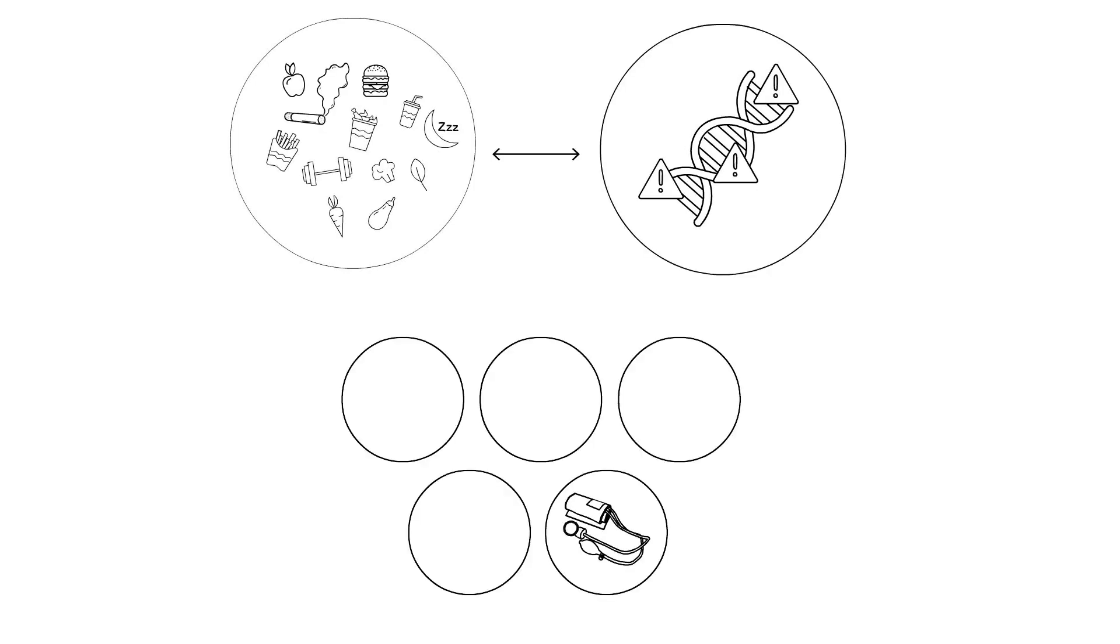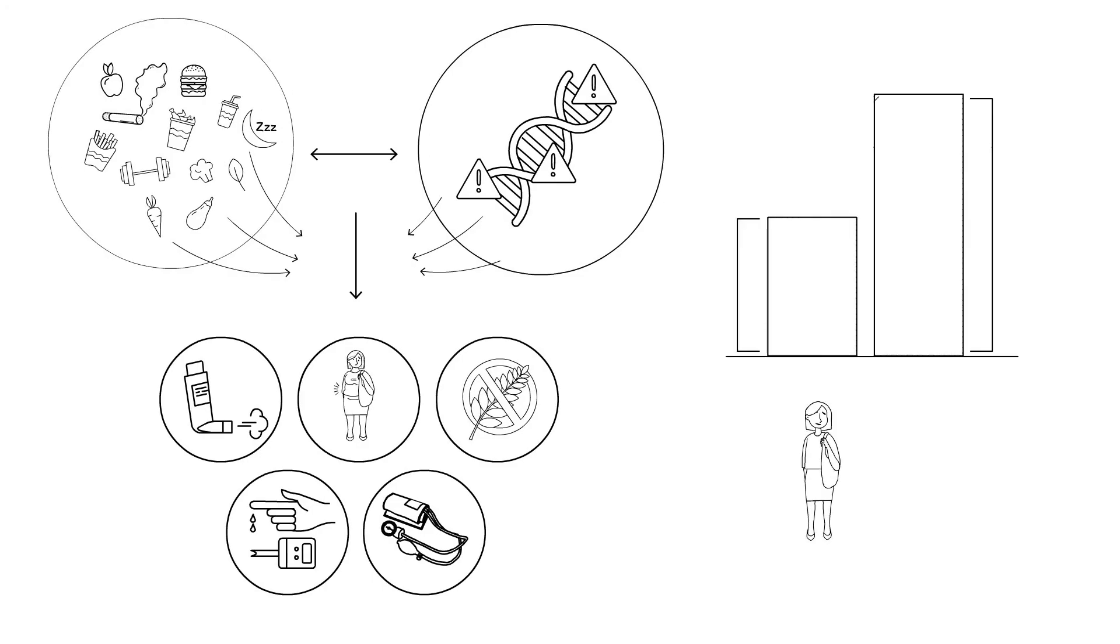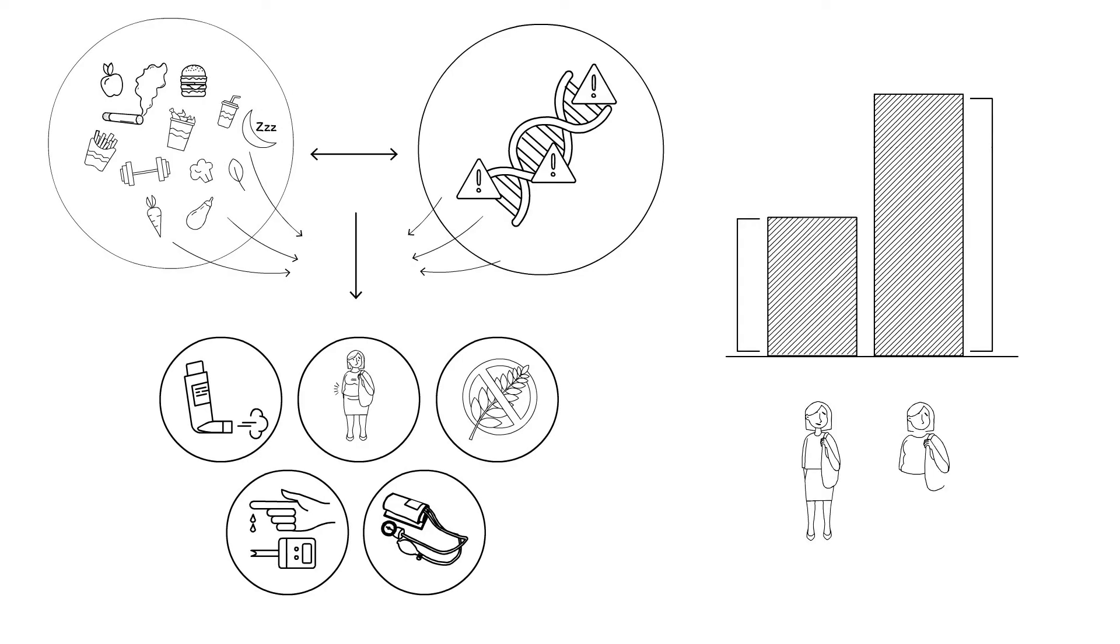There is thus an interplay between the environment and genetics that together contribute to cause complex diseases. Each risk factor contributes slightly to getting the disease. While we do not exactly know to what extent that happens, we know that a certain threshold must be reached in order to get the complex disorder, like becoming obese. This threshold is reached through the accumulation of genetic and environmental factors.